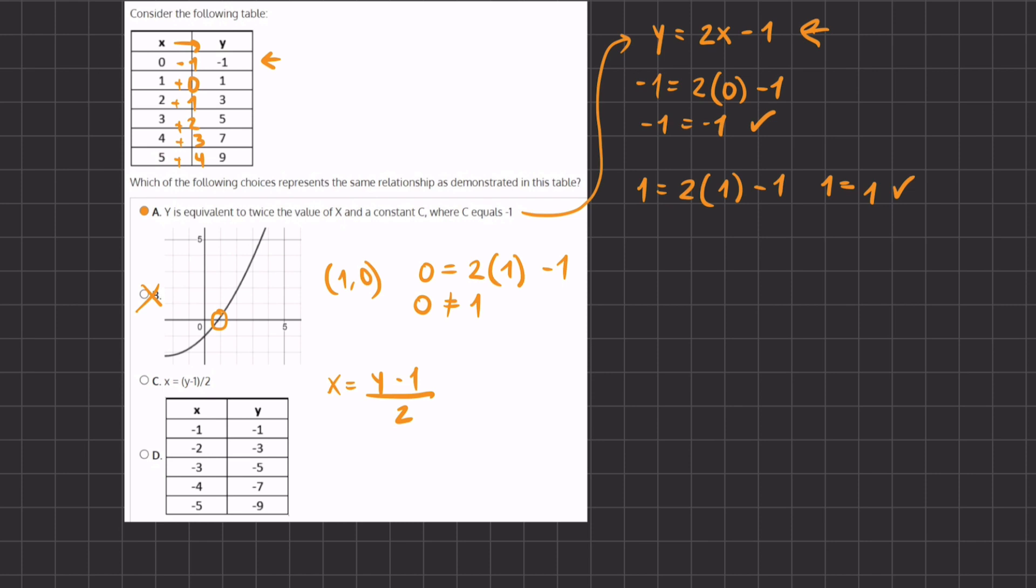If we plug in the values for x, 0 = (-1 - 1)/2. Simplifying this we have 0 = (-1 - 1)/2 = -2/2 = -1. Because 0 does not equal -1, C is eliminated.